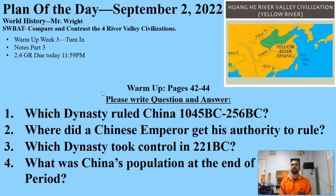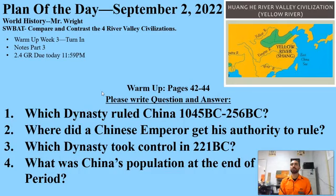Your warm-up today is to answer the following four questions. Number one, which dynasty ruled China from 1045 BC to 256 BC? Two, where did a Chinese emperor get his authority to rule? Number three, which dynasty took control in 221 BC? And number four, what was China's population at the end of the Zhou period? You'll read in your books, pages 42 to 44, to find the answers to these four questions.